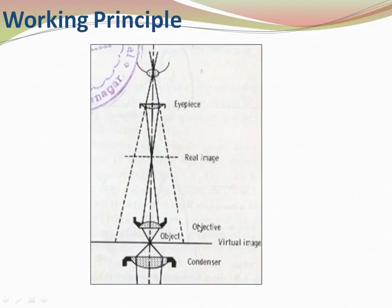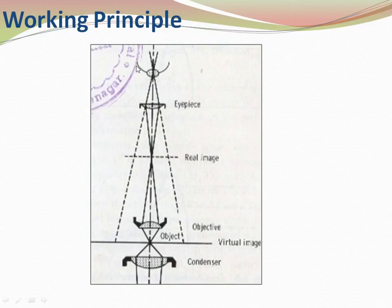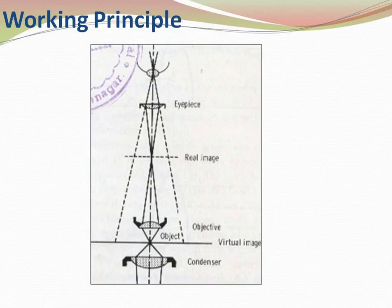Working principle of the microscope: there is a light source below, then a condenser, then the object or specimen on a glass slide, then the objective, and the eyepiece where we look. When light passes through the condenser, it focuses on the object. The condenser's function is to focus the light on the object. Light then passes from the object to the objective, which forms a real image between the eyepiece and the object. The eyepiece forms a virtual image.